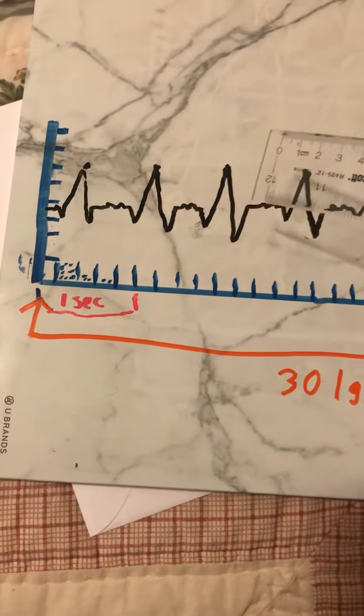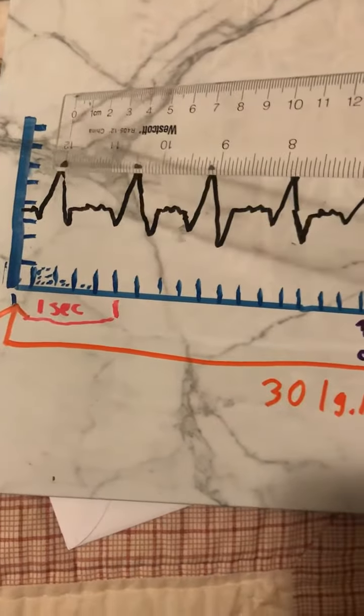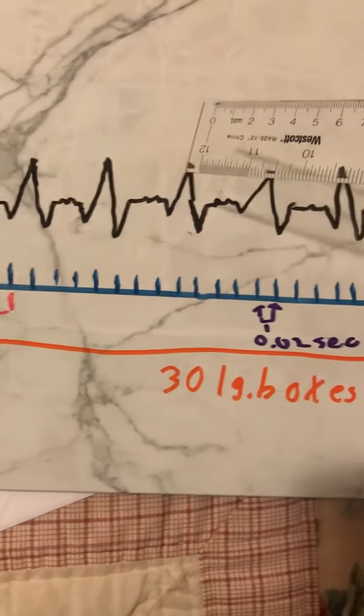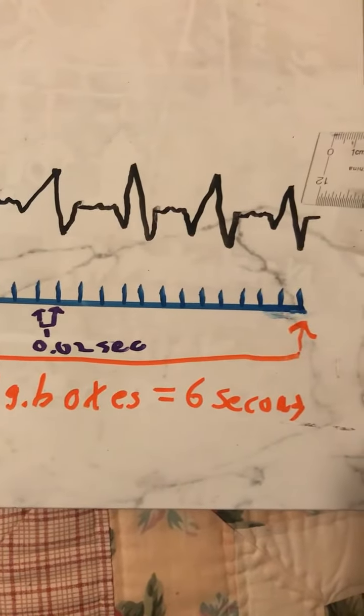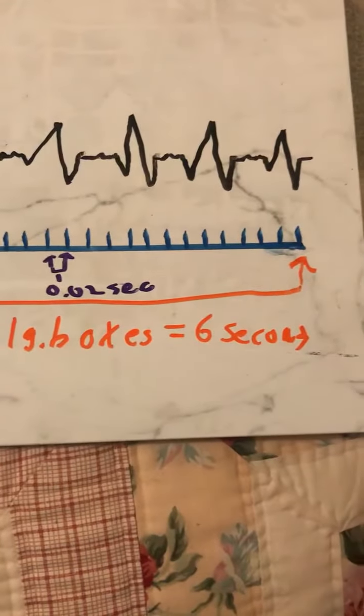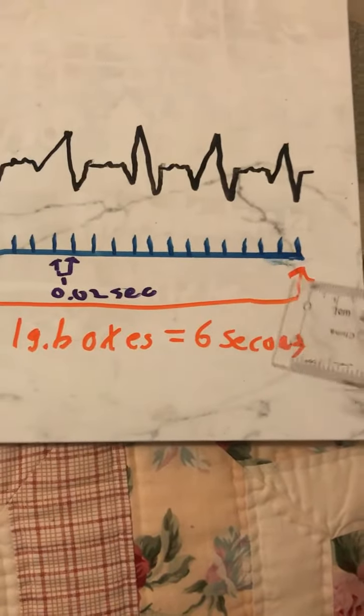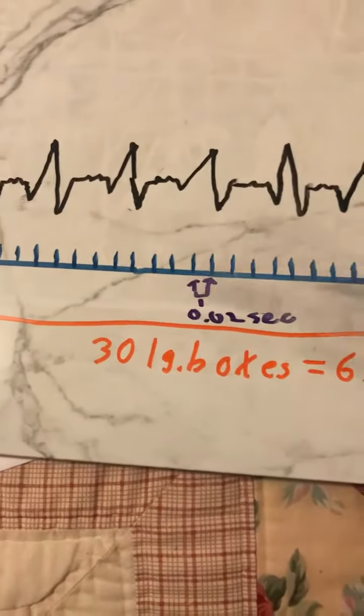QRS and T. I take these QRS interval complexes and I go 1, 2, 3, 4, 5, 6, 7, 8. Eight over a period of 6 seconds, and multiply that by 10, which is one minute, and that's going to be 80 beats per minute.